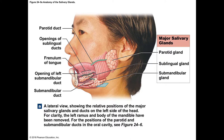Past the teeth, we have the salivary glands: the parotid salivary gland, the sublingual salivary gland, and the submandibular salivary gland. On the lab exam, include the word 'salivary.' These glands secrete a lot of fluid and water to make the substance in your mouth easier to swallow.